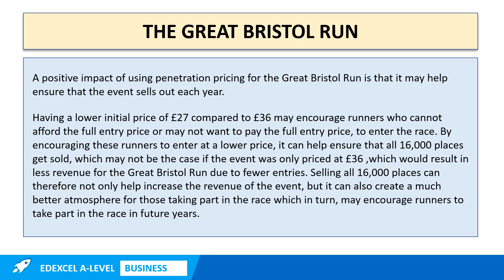What we've got here is a very well contextualised response with logical chains of reasoning. We're talking about the lower initial price of £27 compared to £36, using the word 'runners' rooted in the context, referring to the entry price and entering the race, and the 16,000 places being sold. We've also talked about creating a better atmosphere for those taking part. So we can see how rooted this paragraph is in the overall context — well contextualised with logical and coherent chains of reasoning.